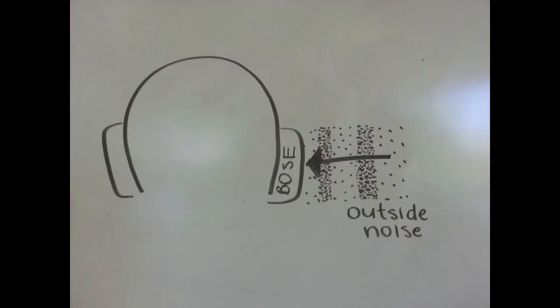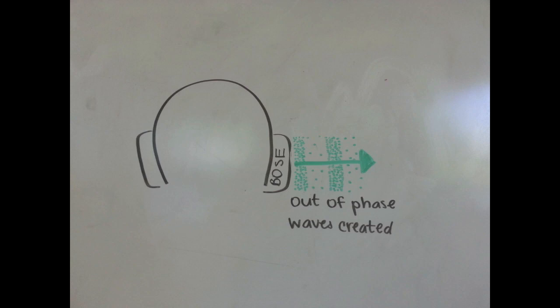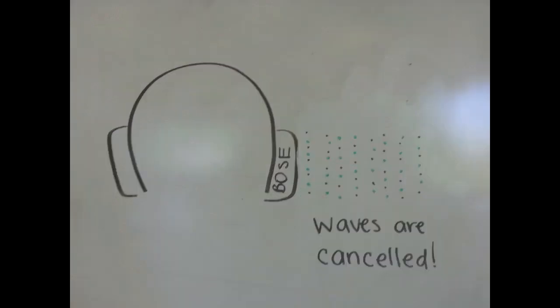Noise-canceling headphones demonstrate the practical application of destructive interference. Outside noises are picked up by a microphone. Then, identical out-of-phase waves are created by the headphones. Two waves that are out of phase will destructively interfere and cancel out the undesirable waves. The compressions of the outside waves will be canceled by the rarefactions of the headphones, and the rarefactions of the outside waves will be canceled by the compressions of the headphones.